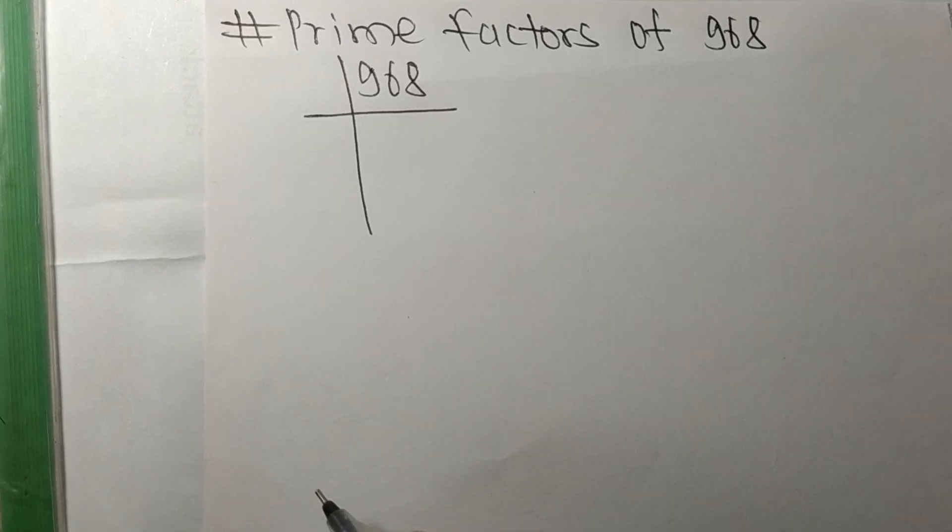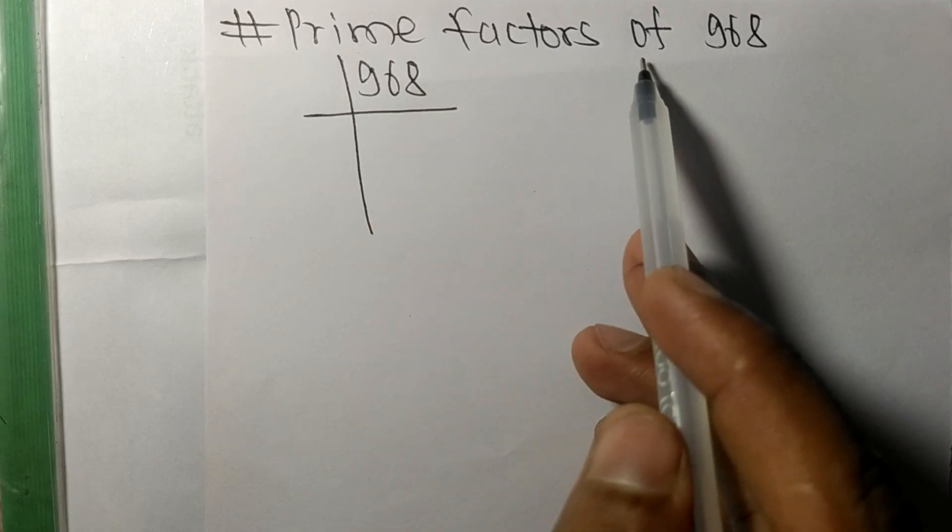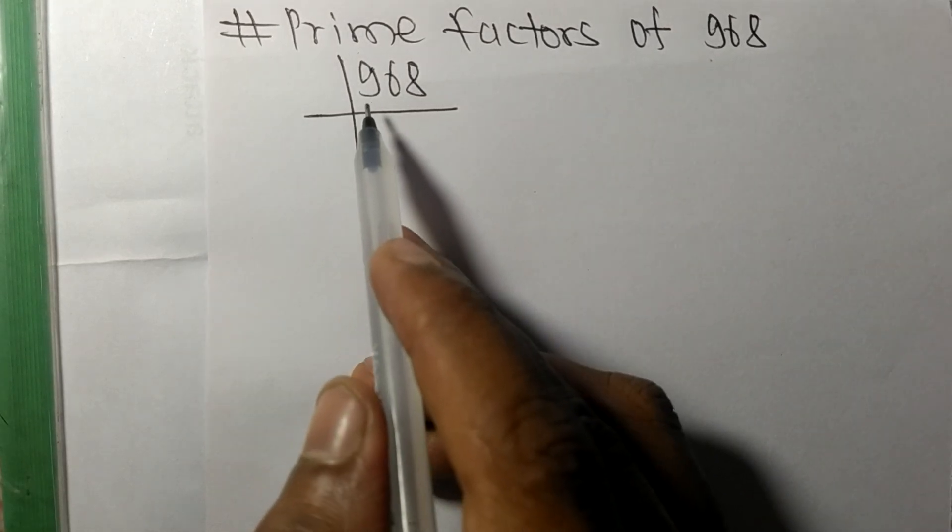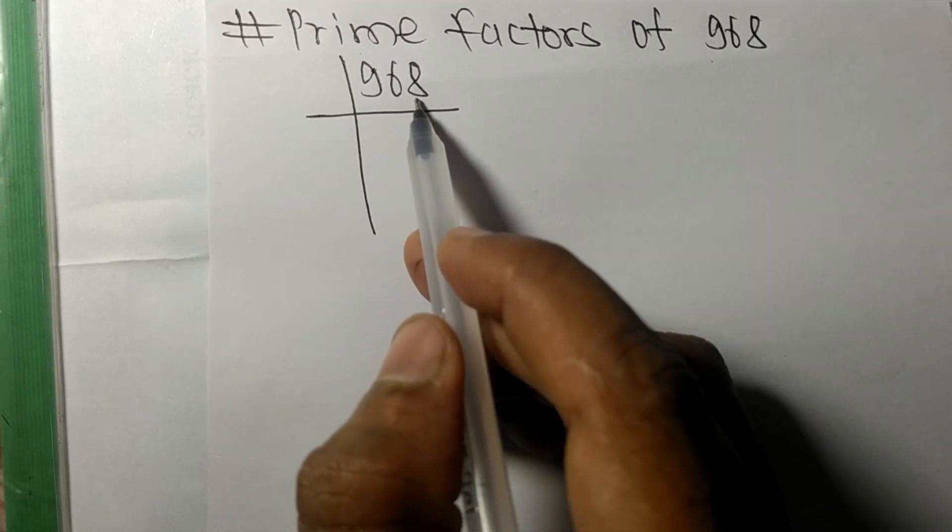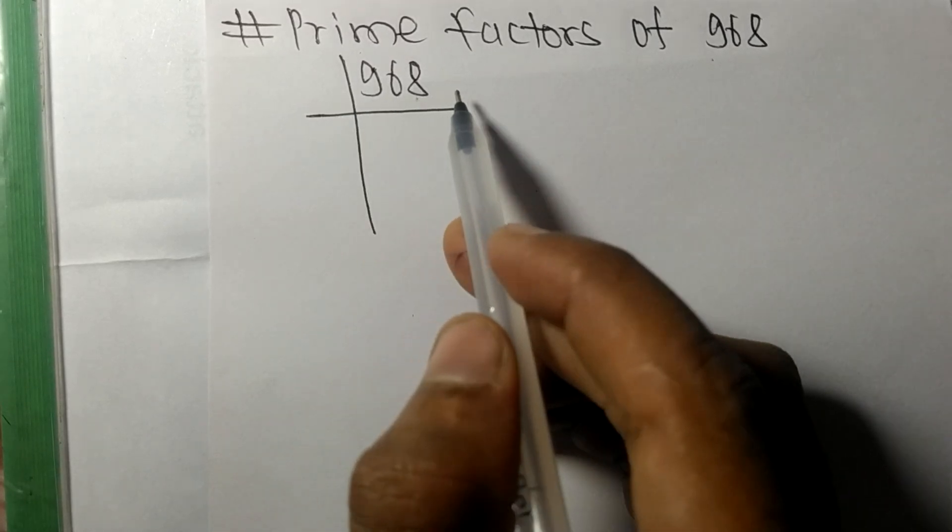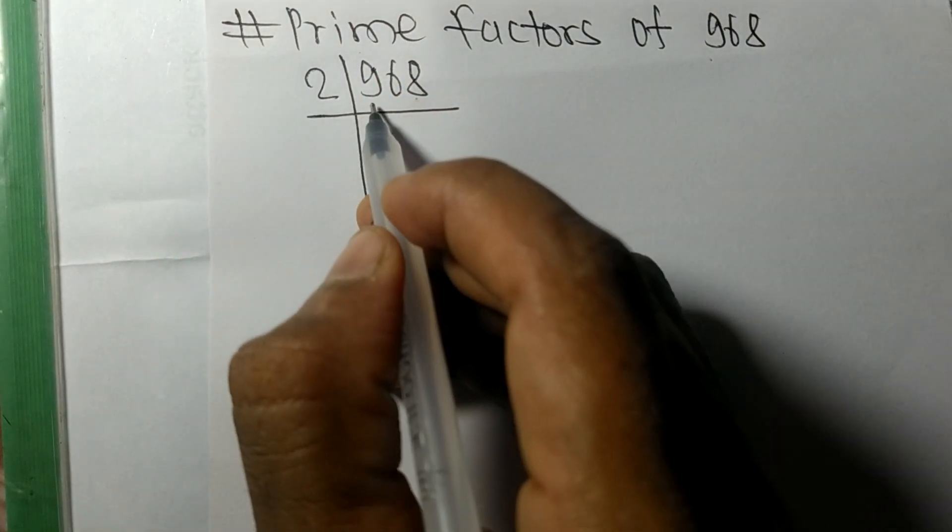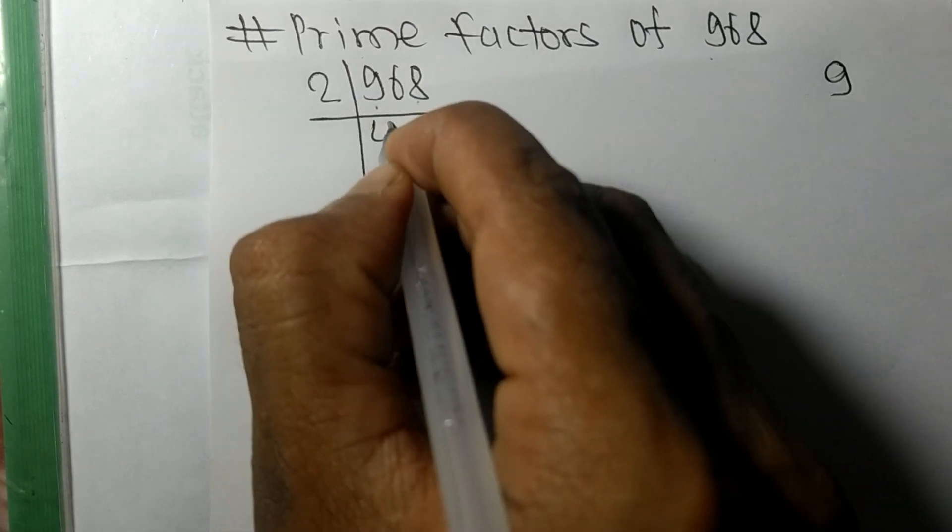So today in this video we shall learn to find the prime factors of 968. 968 contains an even number 8 at last, so it is exactly divisible by 2. First we have 9, so 2 times 4 mean 8. On subtracting we get 1. This 6, 16. 2 times 8 mean 16.